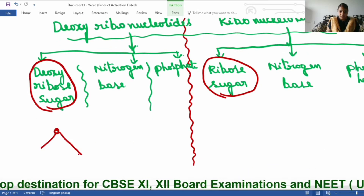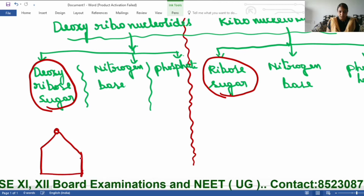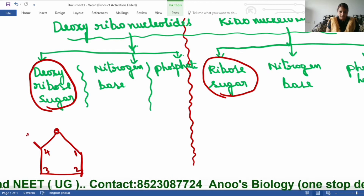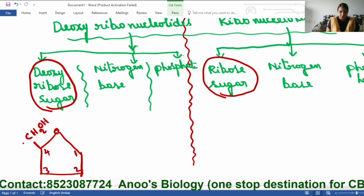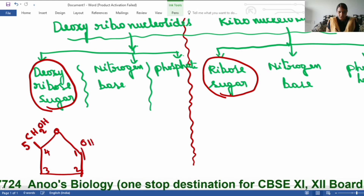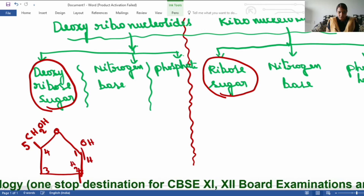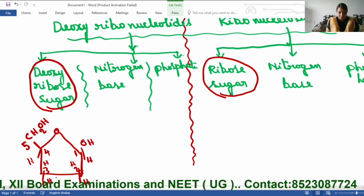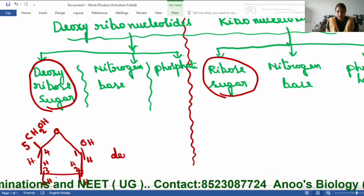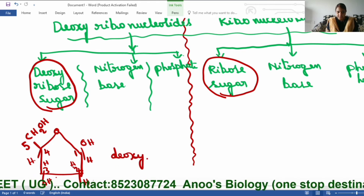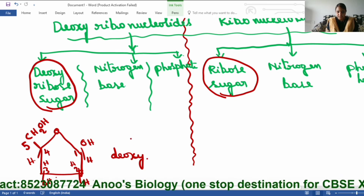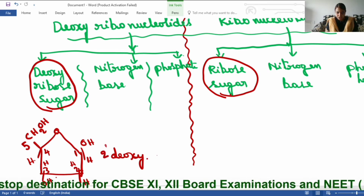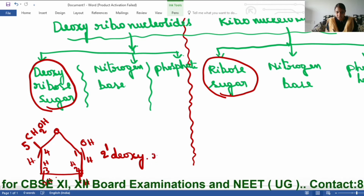Here I am drawing the deoxyribose sugar — a pentose sugar. The carbon positions are: first, second, third, fourth, and fifth. At the second carbon, there is H and H (no hydroxyl group), and at the third position there is H and OH. This is deoxyribose sugar because at the second position it lacks one oxygen — hence 2-deoxyribose sugar.